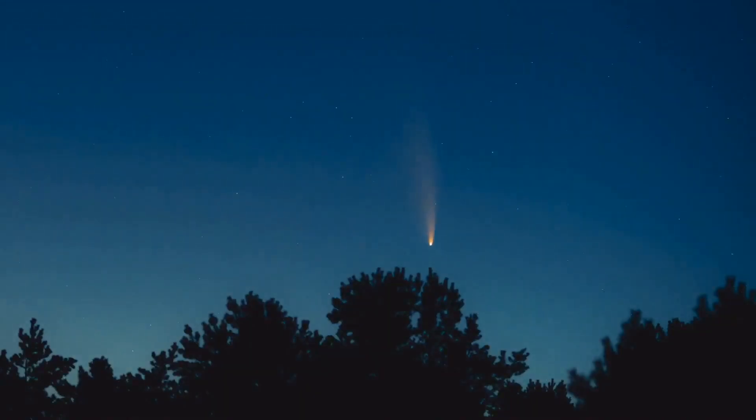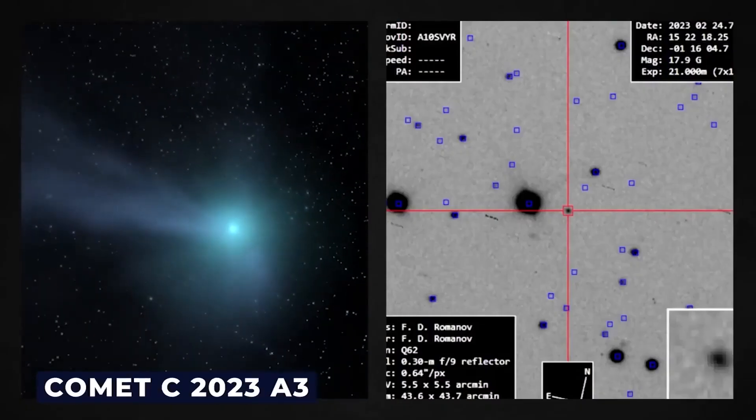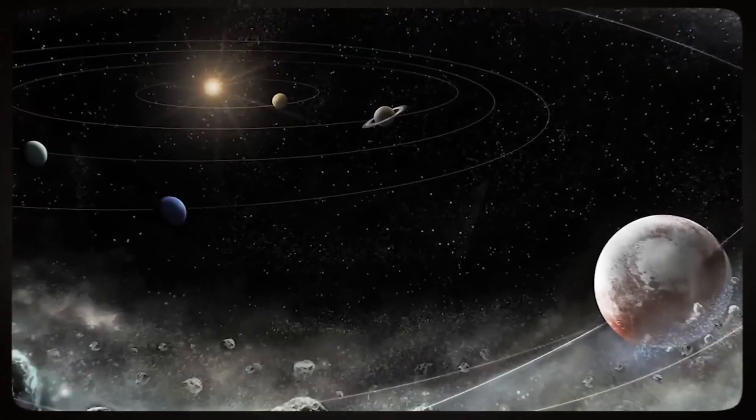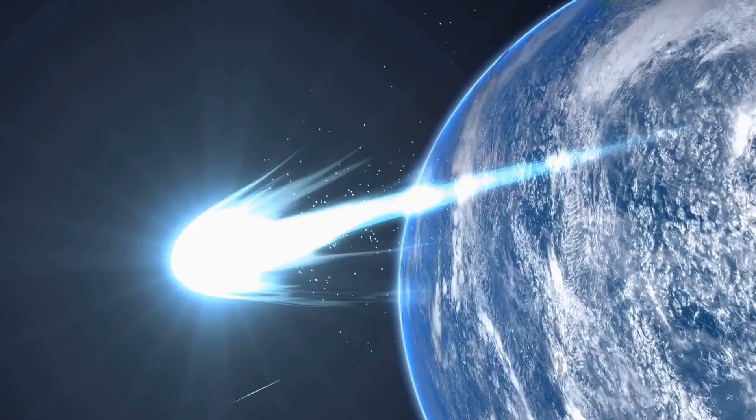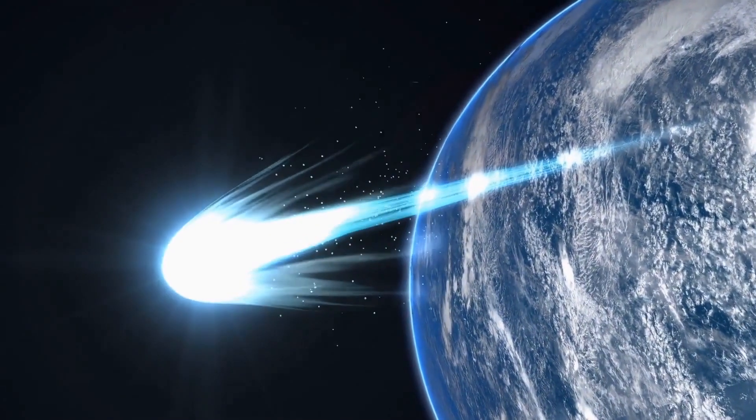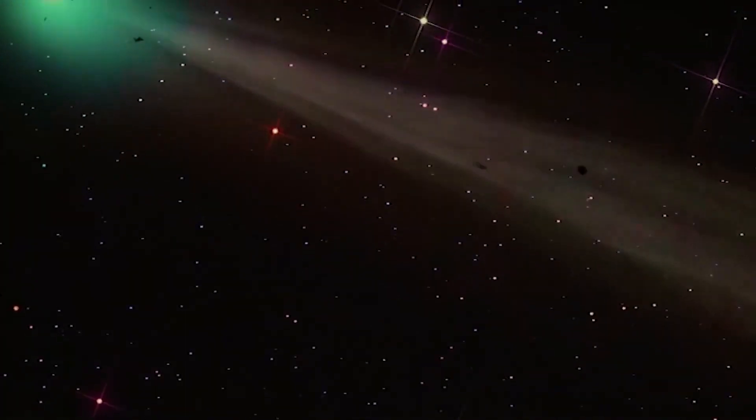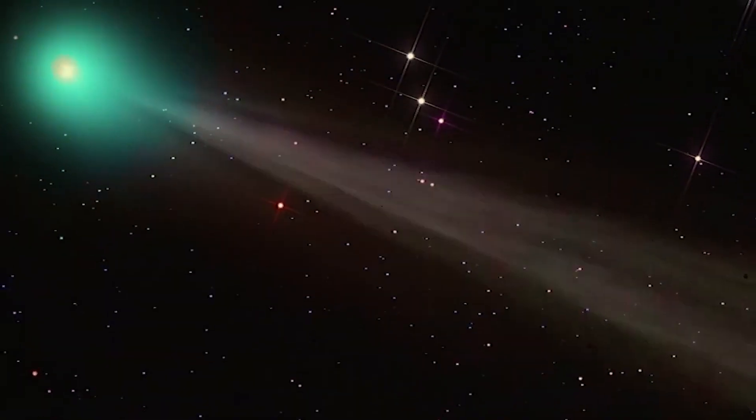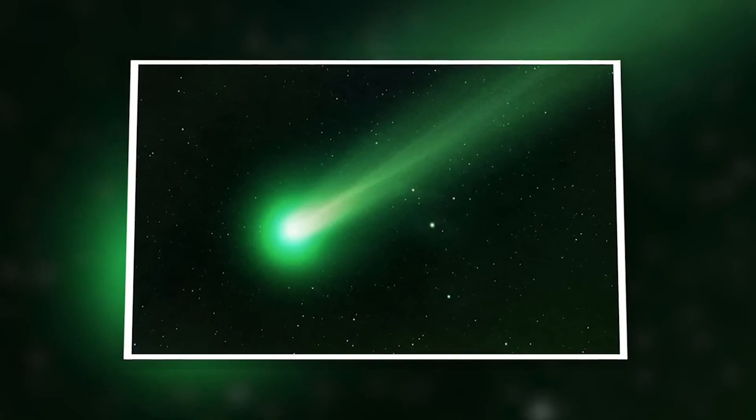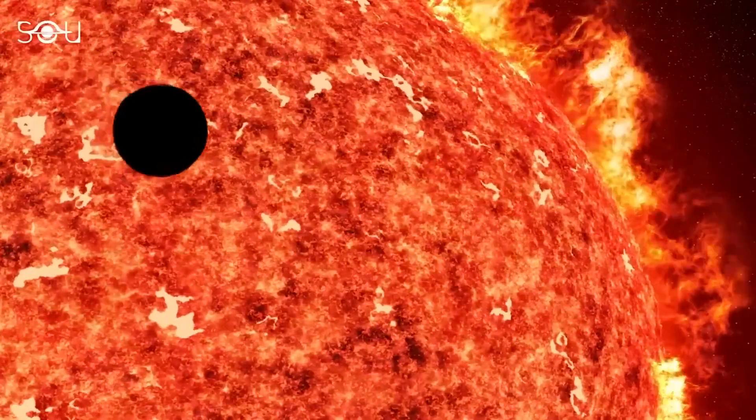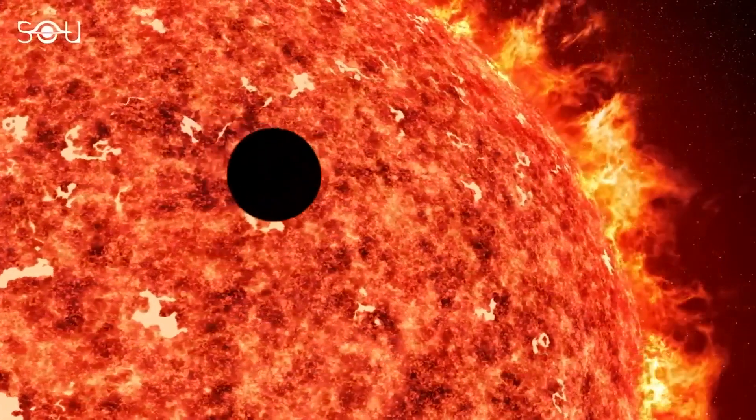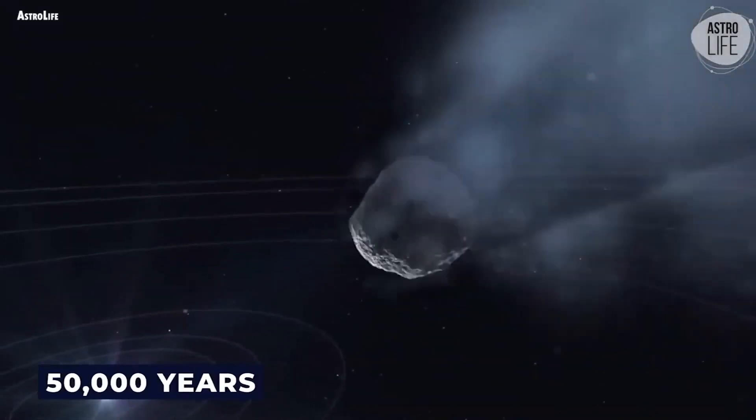What truly distinguishes the green comet C2022E3 Tunin Atlas is its exceptional timing within our cosmic calendar. While comets like Halley's comet grace our skies with relative frequency, making appearances roughly every 76 years, this newfound celestial traveler follows a far grander orbit around the sun. In fact, it embarks on an epic journey that spans a staggering 50,000 years to complete a full circuit.